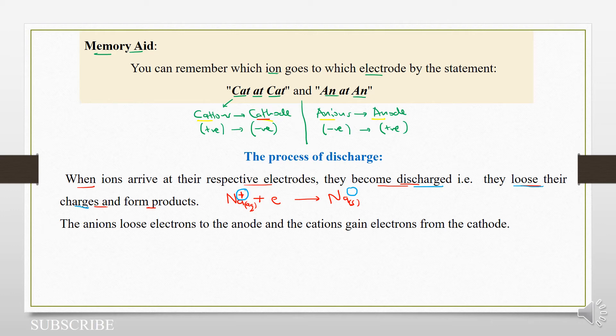The same applies to an anion that will go to the anode — it will also lose its electron and it will become discharged.